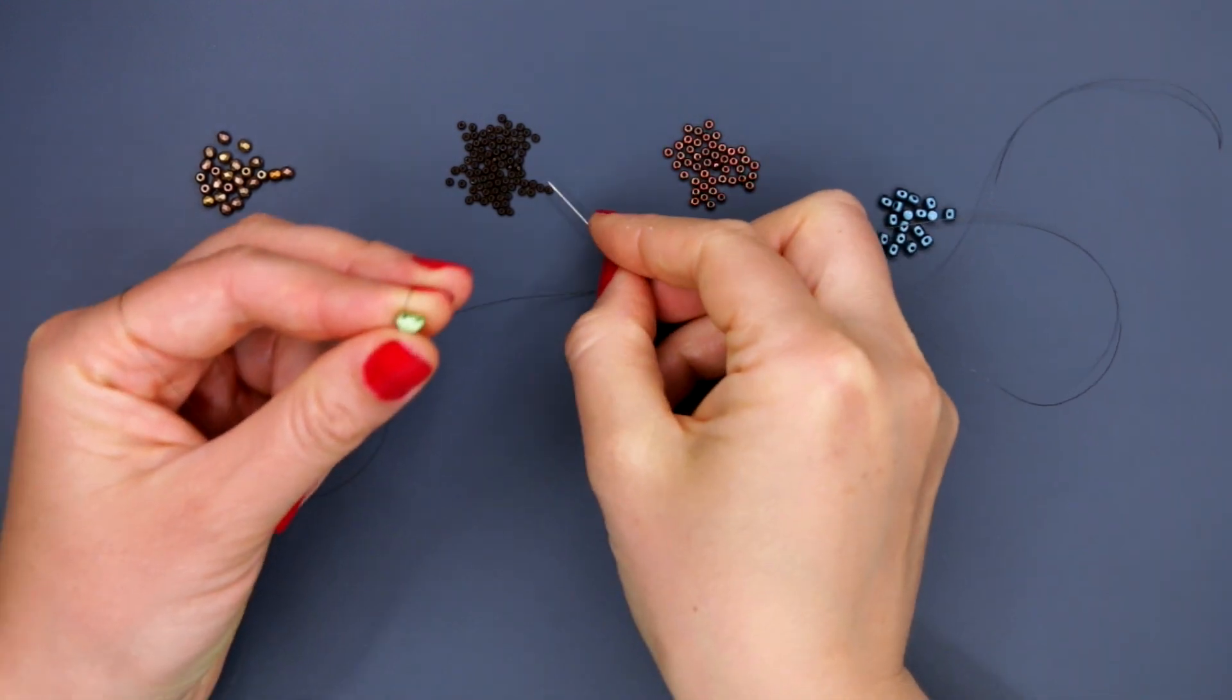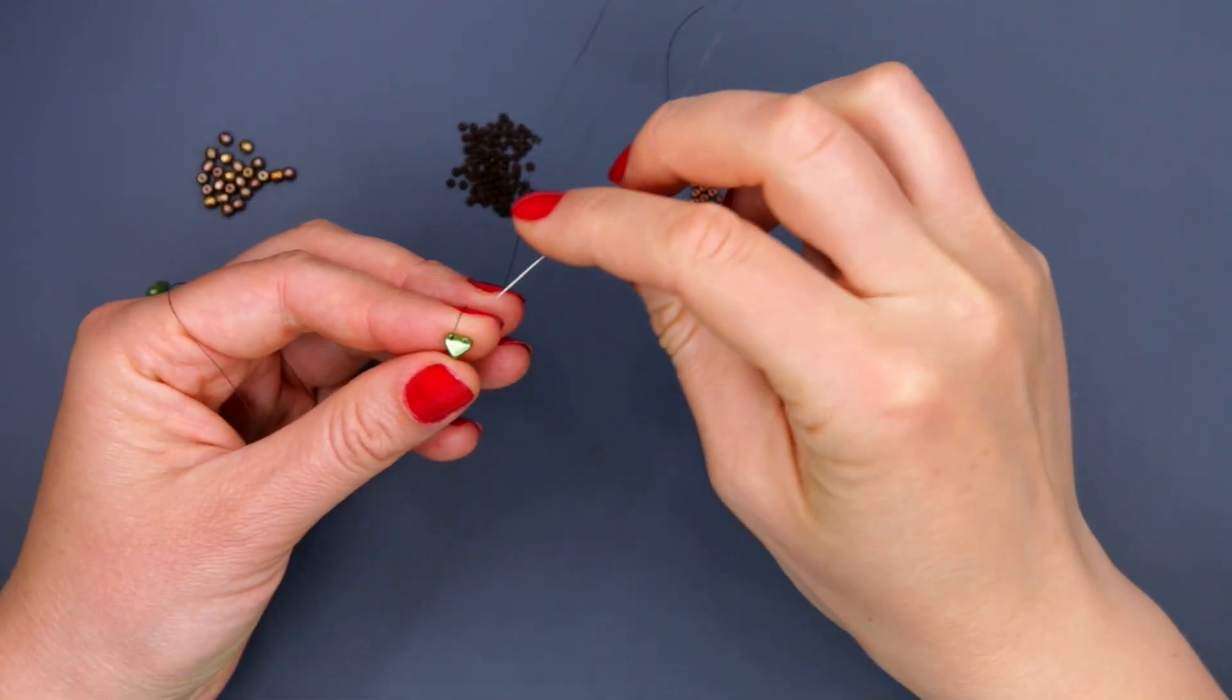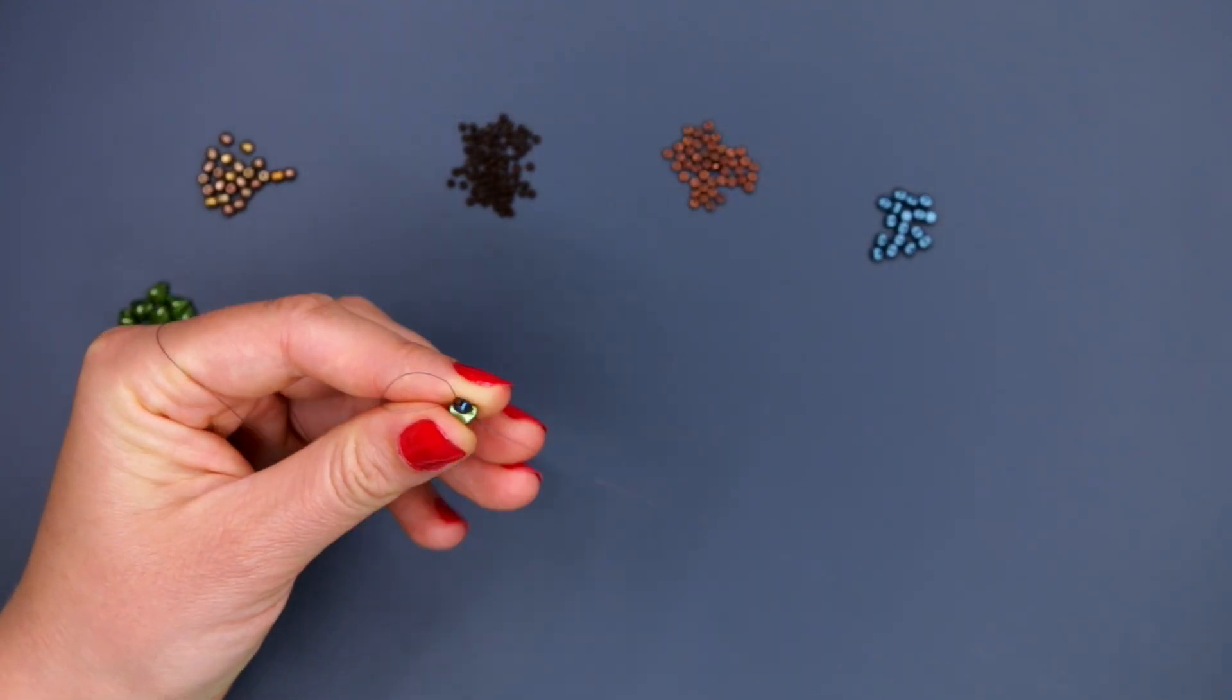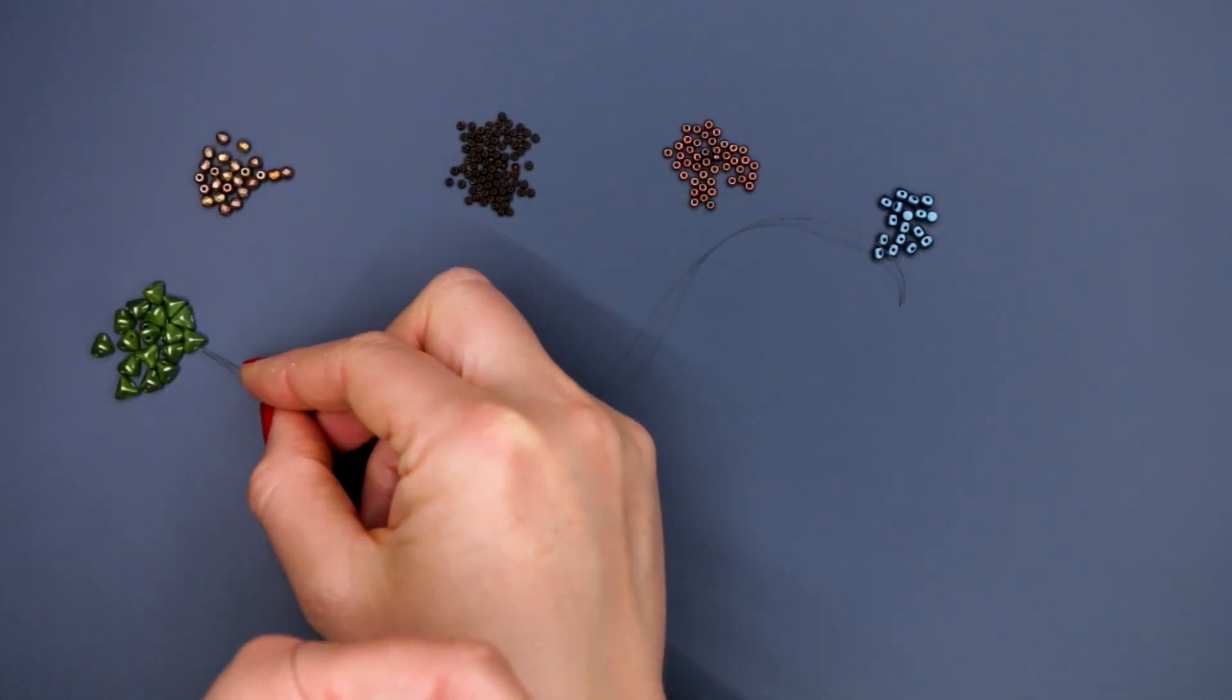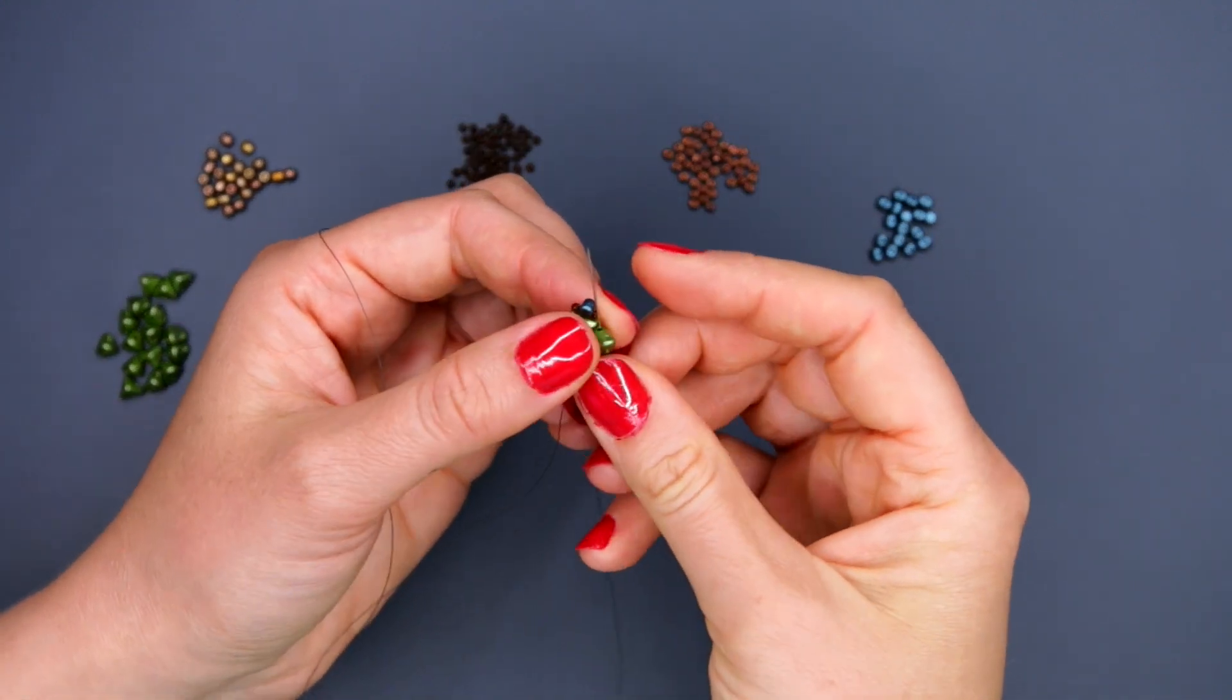String the combination: seed bead size 11, minus bead, seed bead size 11, and go through the second base hole of the same triangle. String seed bead size 10 and the next triangle in the same manner, from the side hole towards the base.